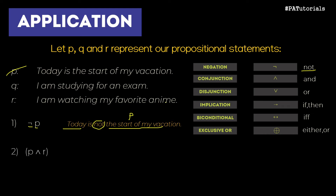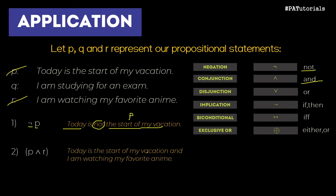Let's try the second example: P and R. Our propositional variables are P and R, so we use both sentences. The operator is conjunction, placed in the middle of the two sentences and translated as 'and.' The result is: 'Today is the start of my vacation AND I am watching my favorite anime.'